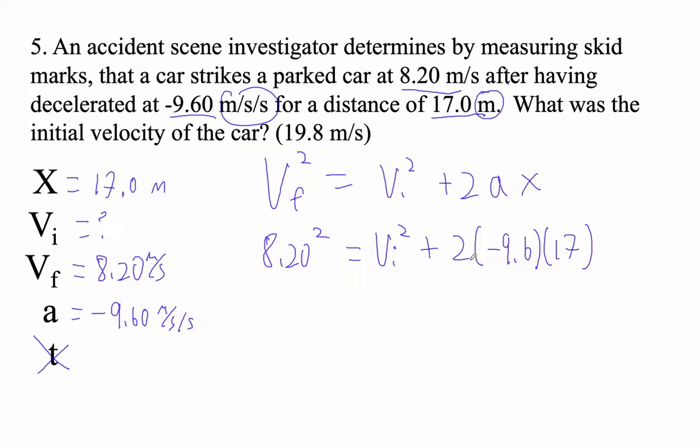So let's figure out this term right here. 2 times negative 9.6 times 17 gives me a big number: negative 326.4. And then 8.2 squared is 67.24.